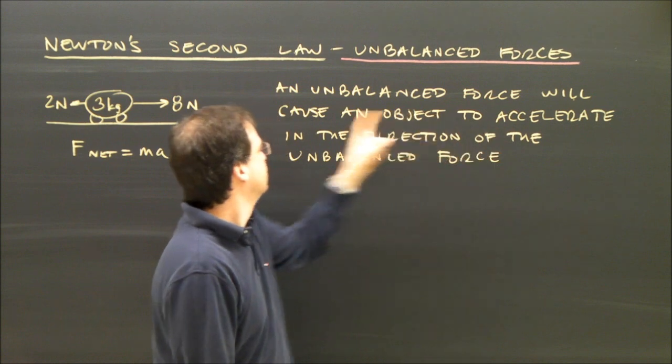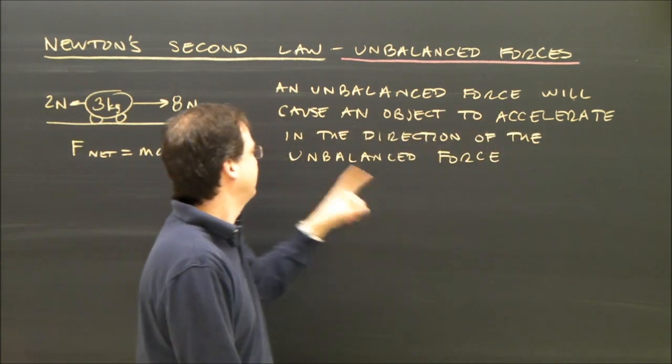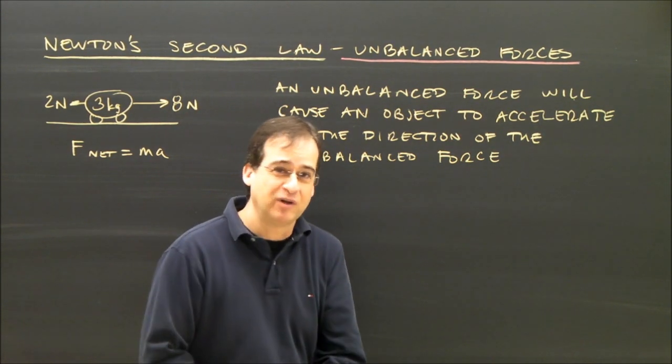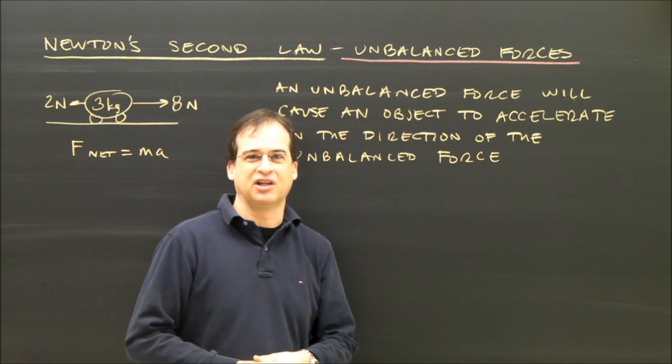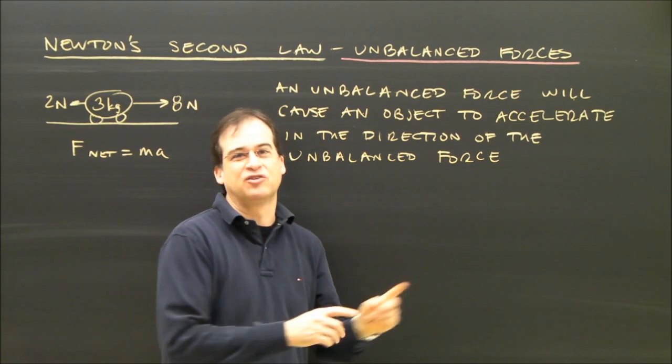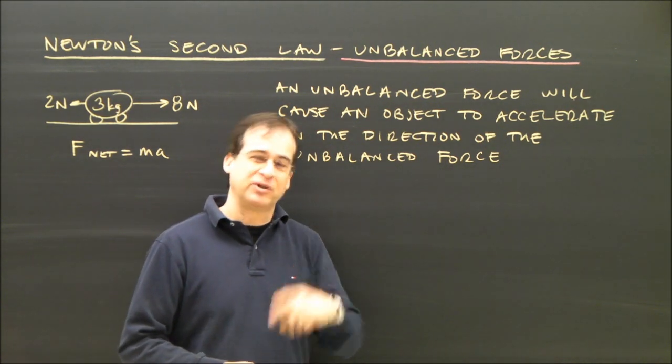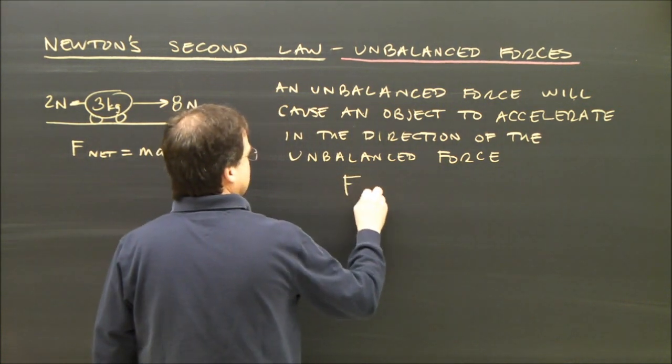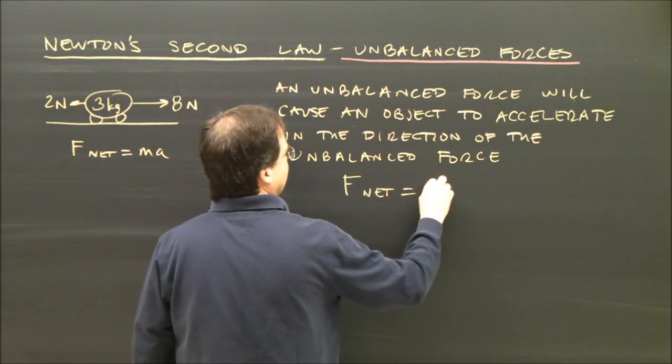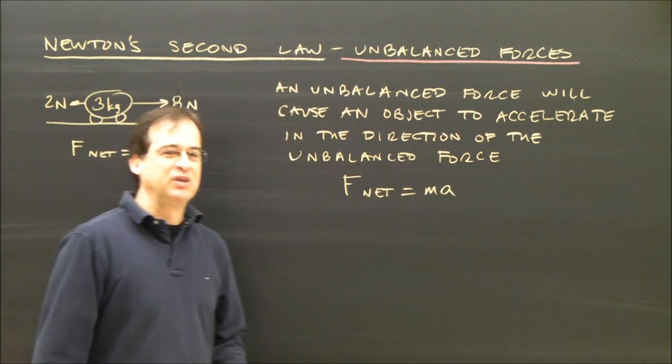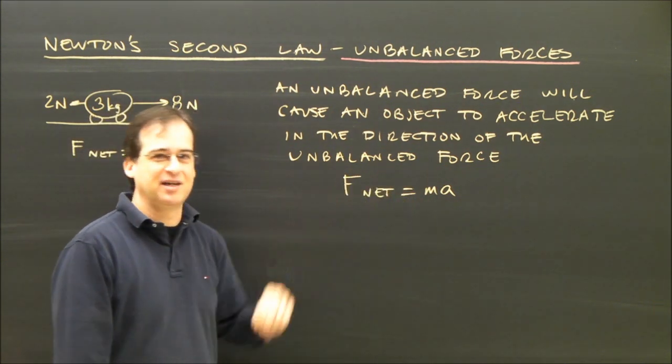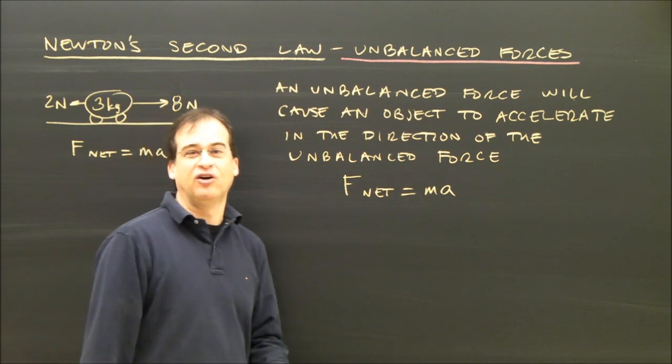An unbalanced force will cause an object to accelerate in the direction of the unbalanced force. This is important. If you have an unbalanced force, the object's going to accelerate, and it's going to accelerate in the direction of that unbalanced force. And we'll get to why that can be confusing in just a second. But that means Newton's second law, which is usually written this way, F net equals MA. Some sources will say F unbalanced equals MA, but either way it's the same thing. So this is Newton's second law, it's a formula.